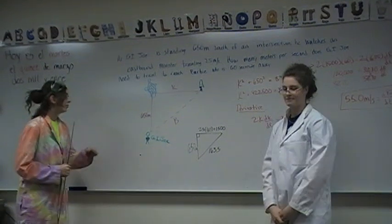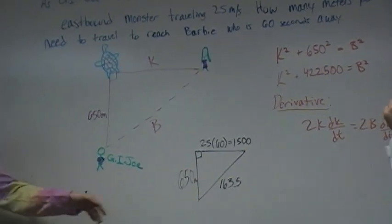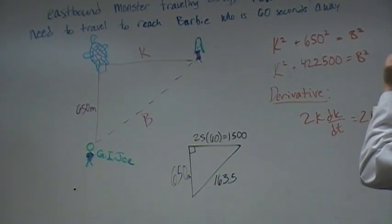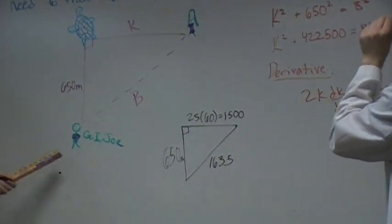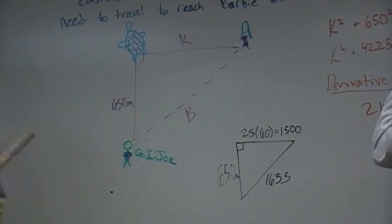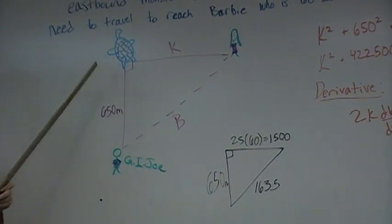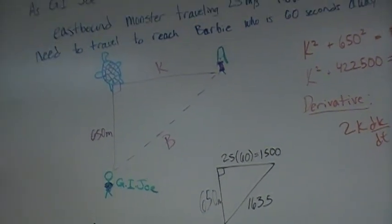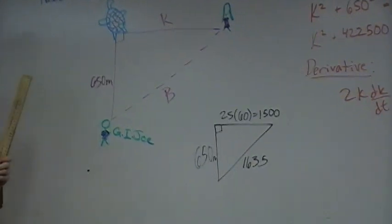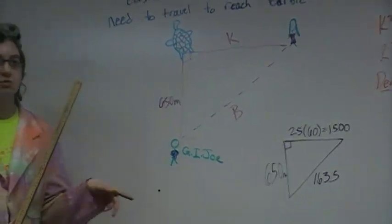As we have already done, we have drawn a beautiful diagram for you all. As Katie has pointed out earlier, here's G.I. Joe, here's our monster, and here's Barbie. Oh, poor helpless little Barbie. G.I. Joe needs to save her.